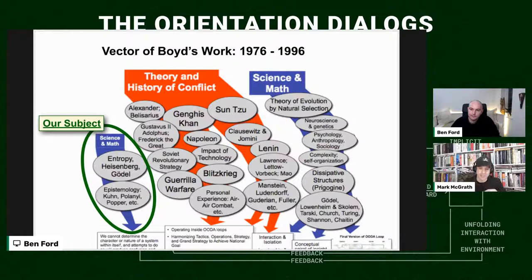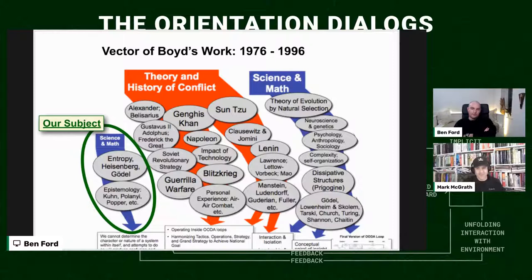I wasn't lucky enough, but I believe you've been to the Boyd archive at Quantico. A few years back, a group went and took pictures of all his books — all of the books he used as part of his reading list. They all have extensive notes in them. He was always probing and questioning, writing notes in the margins and thinking of ways to improve it.